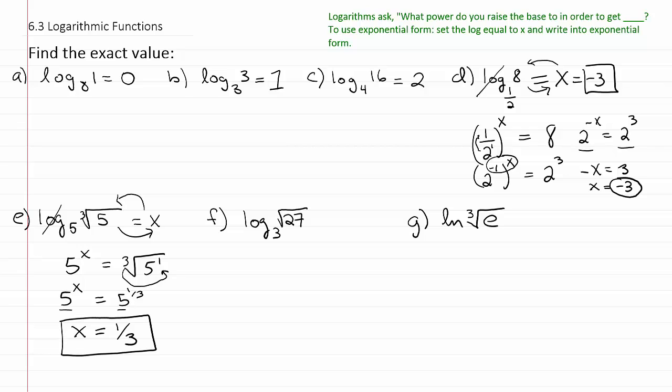All right, so what power do you raise 5 to to have it be equal to the 3rd root of 5? Well, basically, the power is 1 3rd. All right, so a similar thing for f. We'll set it equal to x. Then we'll drop the log and switch. So we end up with 3 to the x is equal to 27 under the square root.